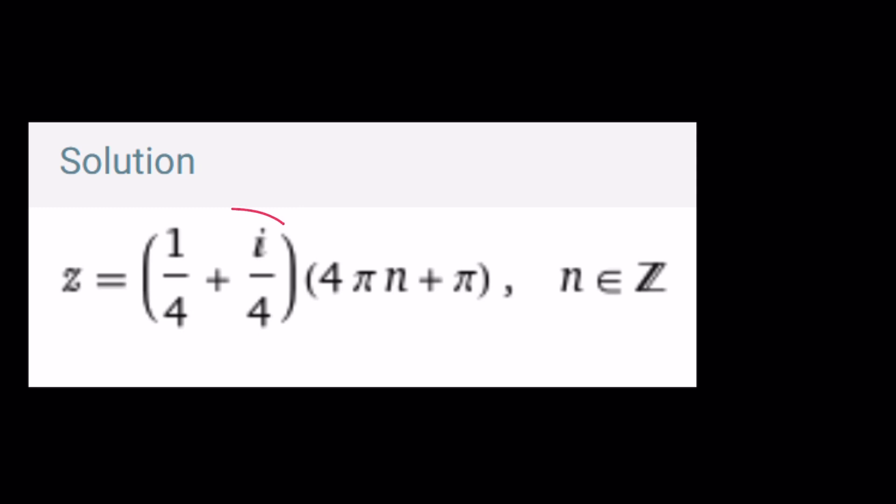So Wolfram Alpha says for this problem the same thing right but they just express it a little differently. Notice that one plus i they have the same denominator so we can kind of factor out one fourth and then distribute over this that four is going to cancel out so on and so forth.